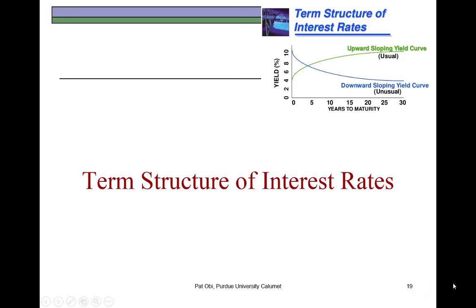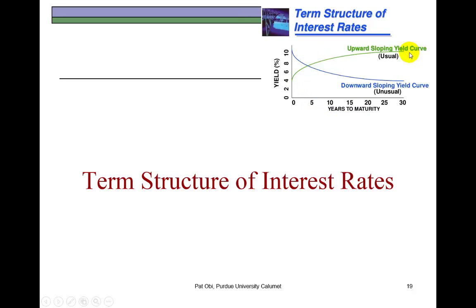This presentation on interest rates discusses the term structure of interest rates, which is the relationship between the years to maturity of a bond and the yield to maturity of the bonds. When the yield to maturity rises with the years to maturity, we have an upsloping yield curve — you can also call it an upward sloping yield curve.